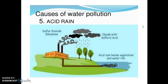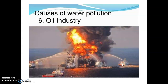Acid rain — air pollution leads to acid rain, which is called sulfuric acid and nitric acid. These are products of oil industries. Waste materials produced accidentally mix with water and pollute it.